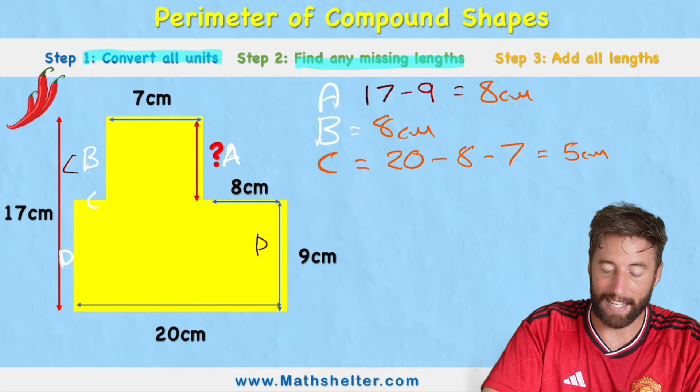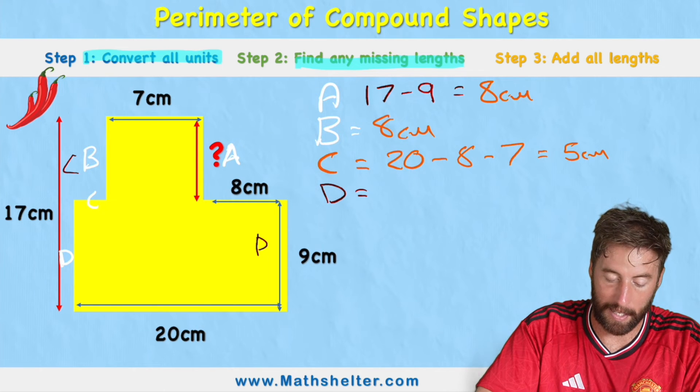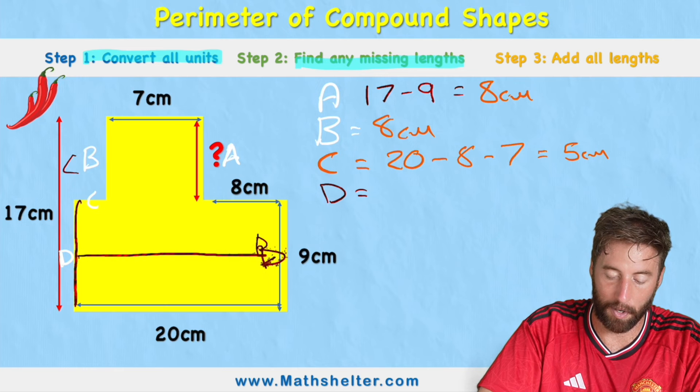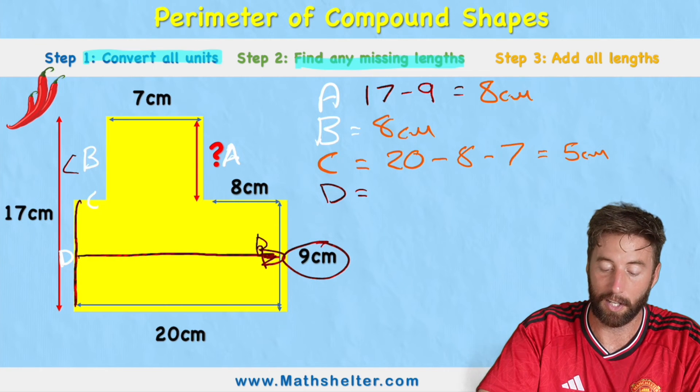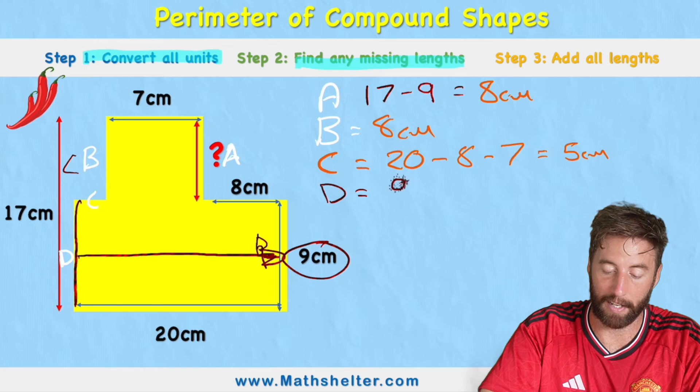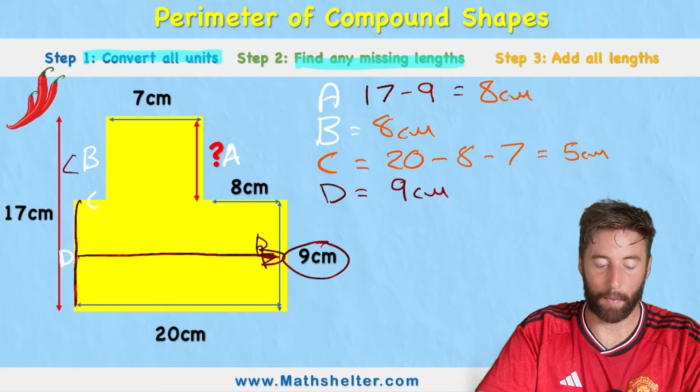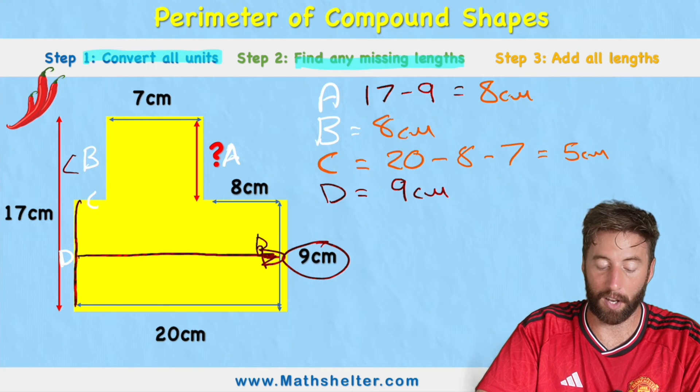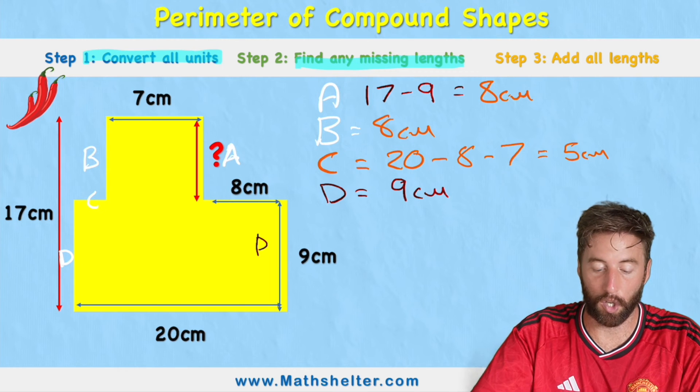And finally, D is an easy one. All we're doing is we can see this length here, look opposite, and we're actually given the entire measurement of 9 centimeters. So D equals 9 centimeters. Wow, there we go. That's all of stage 2 done. There was loads to do.